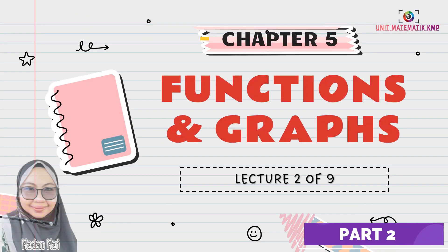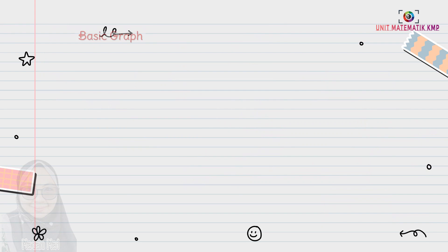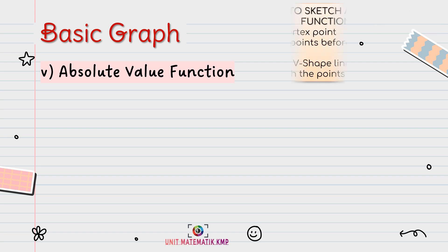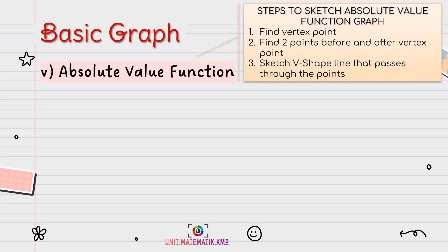Assalamualaikum and hi everyone. Let's continue our lesson in lecture 2 of 9. The next function is the absolute value function. The steps for sketching the graph: first, find the vertex point; second, find two points before and after the vertex point and sketch a V-shape line that passes through the points. The basic shape for this function is V-shape.